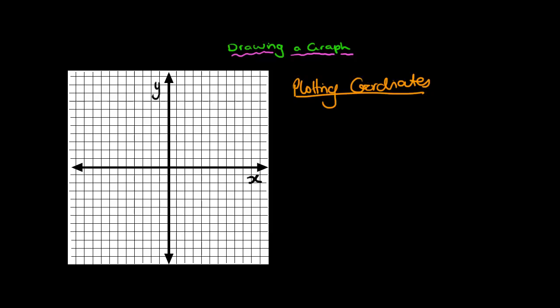Now in order to draw a graph as I explained, we need to have coordinates. Coordinates are always given in the form of X, Y, and you'll notice there are some brackets around them. Those brackets tell me that they are two coordinates. We are always given the X coordinate first and then the Y coordinate. So for example, I might be given the coordinate 3, 4.